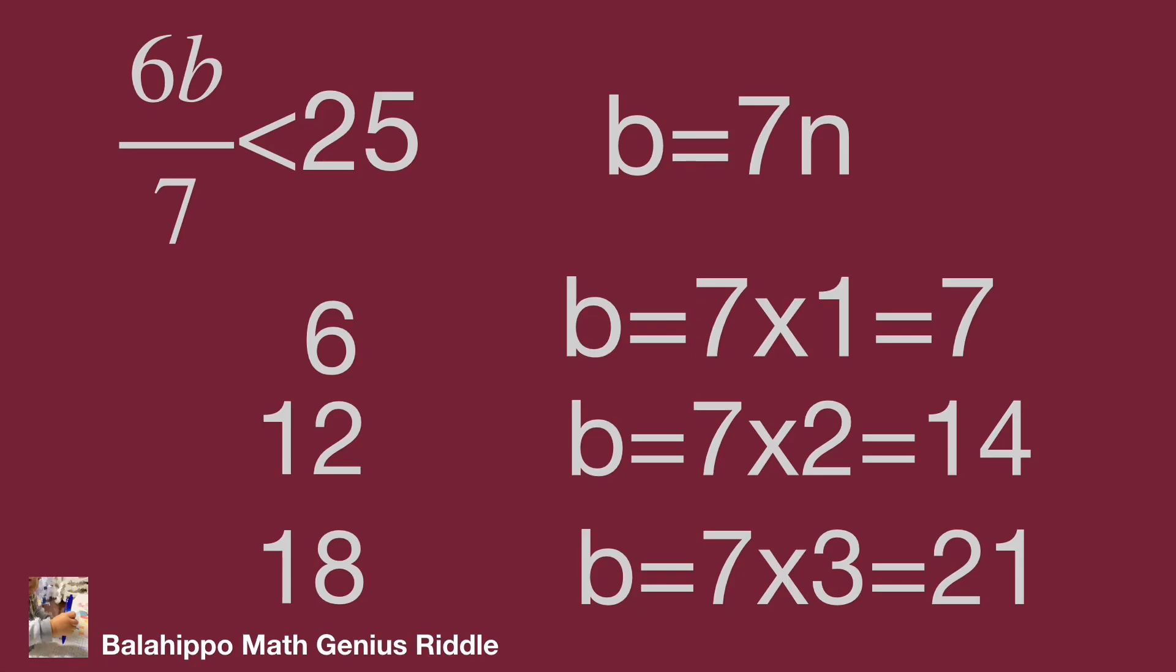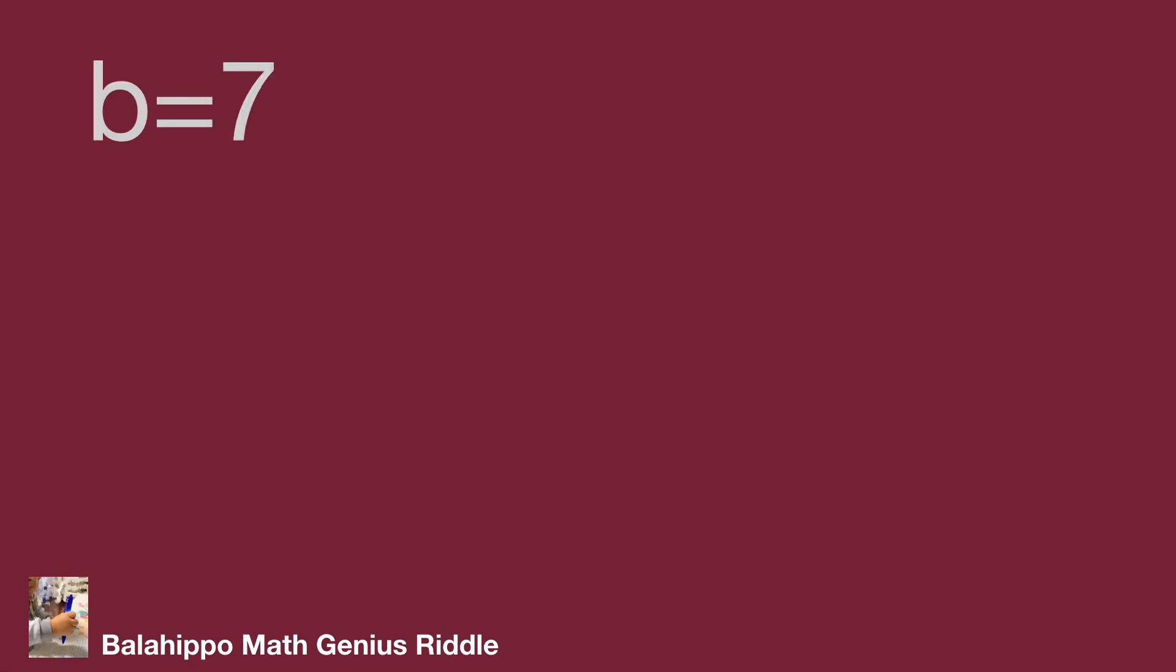When b equals 7, check the equation: a plus b bracket plus 6b over 7 equals 25. Substitute b by 7: a plus 7 plus 6 equals 25. We get a equals 12.